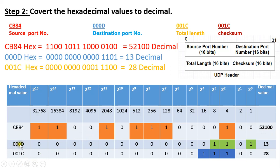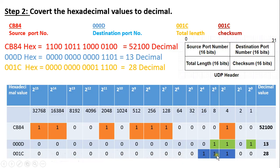The second value 000D in hexadecimal is 0000 0000 0000 1101 in binary. Its corresponding binary weights are 2^0 + 2^2 + 2^3, equal to 1 + 4 + 8, that is 13 in decimal. So the destination port number is 13. The third chunk 001C in binary is 0000 0000 0001 1100.